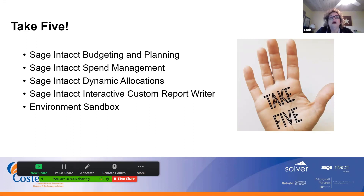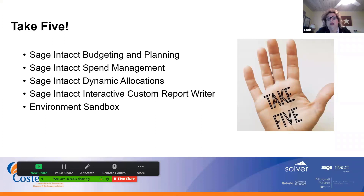It's all about increasing time to benefit — making sure that you are benefiting and being productive in the most efficient way. This is really about utilizing data, whether it's in reports, graphs, or visual data, to embrace digital transformation. So I put together a little session on what I'm calling take five, which will focus on five key areas of the Sage Intact footprint: Sage Intact budgeting and planning, spend management, dynamic allocations, the interactive custom report writer, and our environment sandbox.